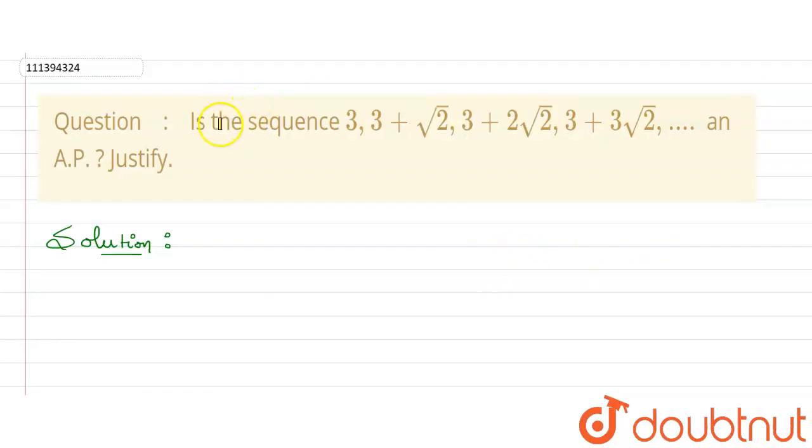Hello everyone, I have seen this question: is the sequence 3, 3 plus root 2, 3 plus 2 root 2, then 3 plus 3 root 2 and so on an AP? We need to justify.